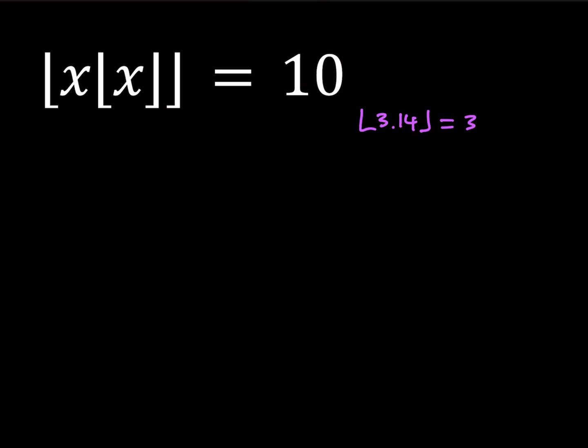So how do we solve floor value equations? Well, there's a couple different methods, but the one that I most often use is setting the floor value equal to an integer, which is n, and then go from there. So we're going to start with that one. Let's suppose that the floor value of x is equal to n, where n is an integer.